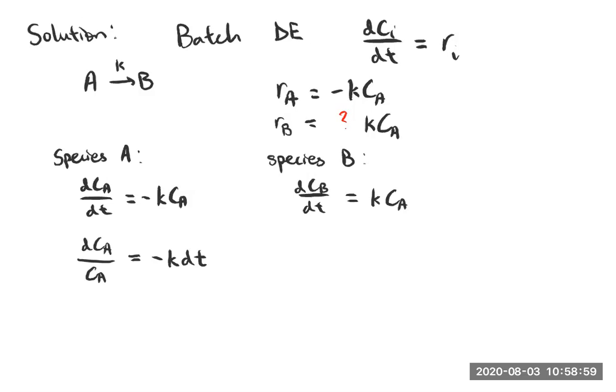You can go ahead and integrate with bounds of CA naught, our initial concentration of CA, which we weren't told, but we can represent the variable, because everything's going to depend on how much we started with in this batch reactor in order to know what the concentration is as a function of time.